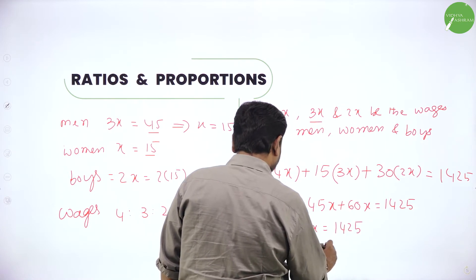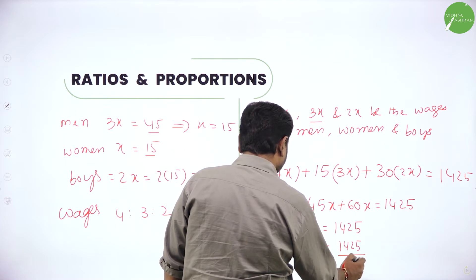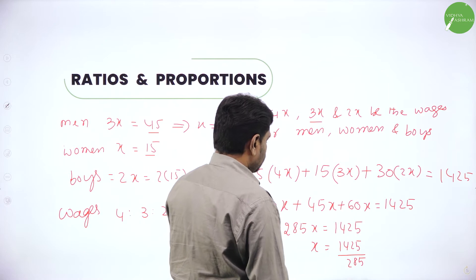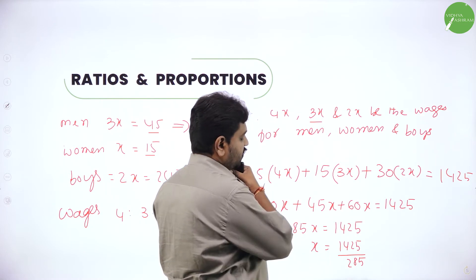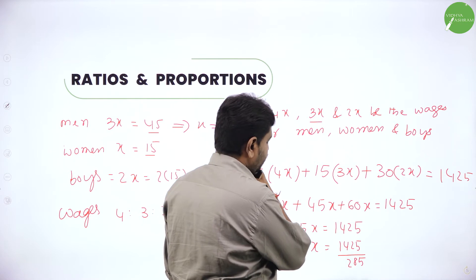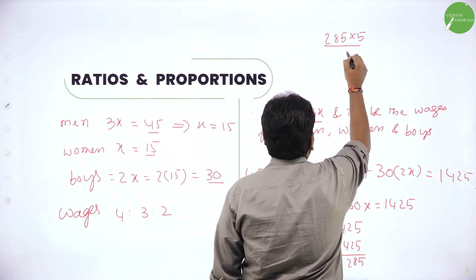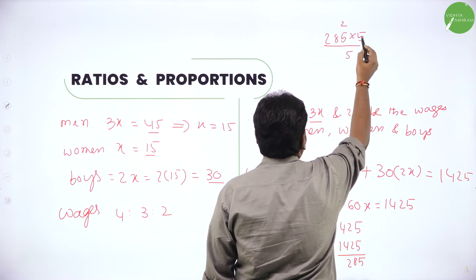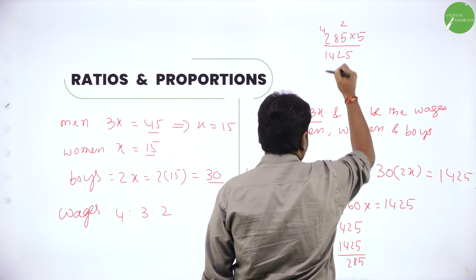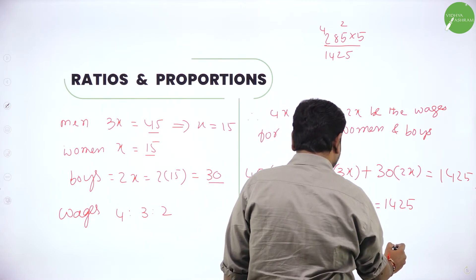Simplify: 45 into 4 is 180x, plus 15 into 3 is 45x, plus 30 into 2 is 60x. So 180x plus 45x plus 60x equals 1,425. That gives 285x equals 1,425. Now get the value of x: x equals 1,425 divided by 285. So you will get x as 5.